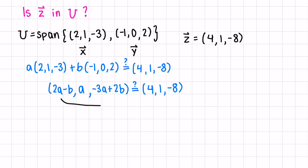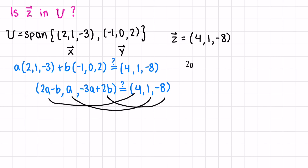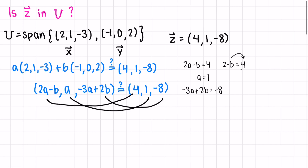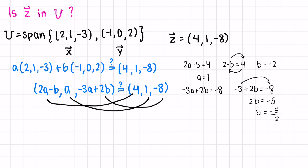We want to see if there is a possible a and b such that all three components are equal. So: 2a minus b equals 4, a equals 1, and negative 3a plus 2b equals negative 8. We already know a is 1, so plugging in: 2 minus b equals 4, giving b equals negative 2. Plugging into the third equation gives negative 5b equals negative 5 over 2, so b equals one half. Since our b values do not match, z is not in U, as it cannot be written as a linear combination of x and y.